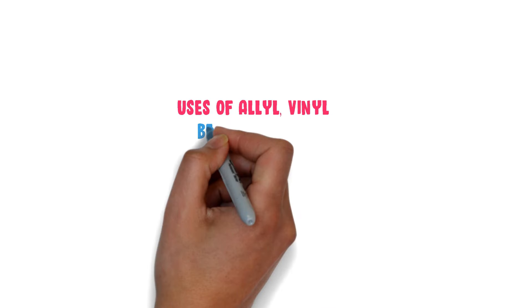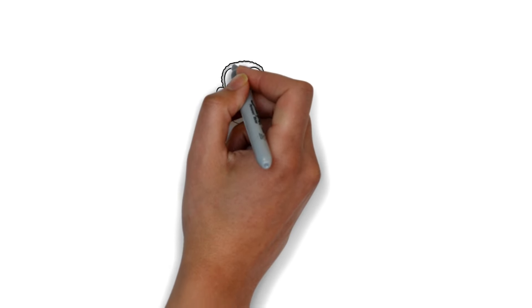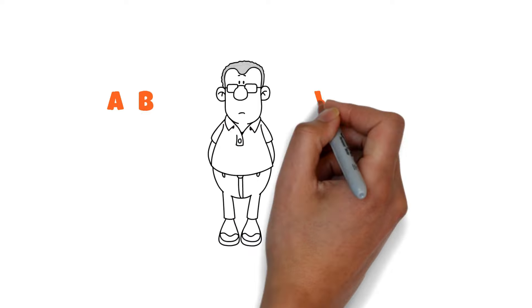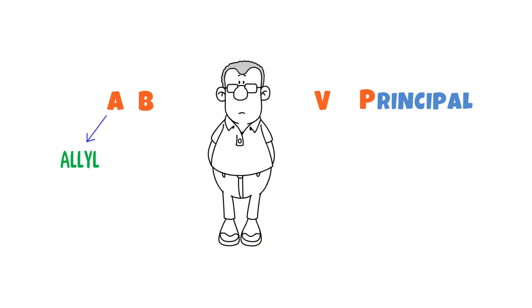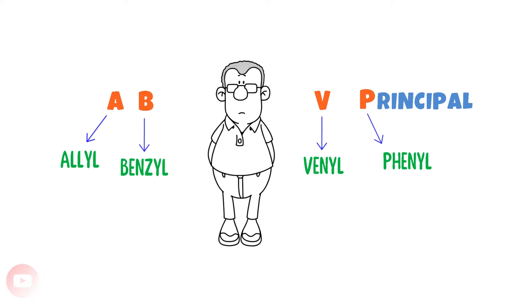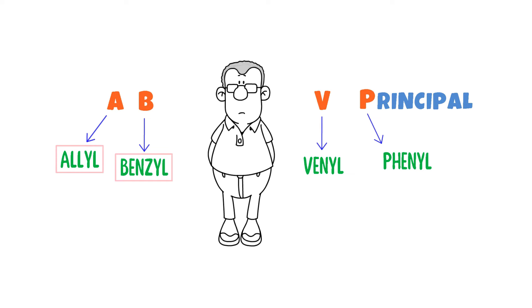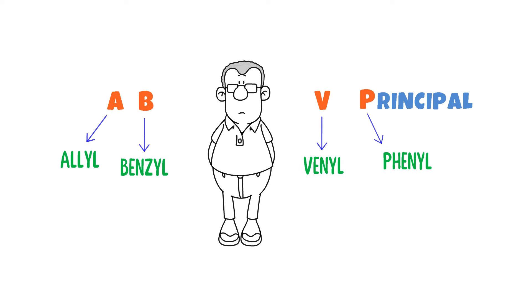Uses of Allyl, Vinyl, Benzyl, and Phenyl in common names. I will teach you my personal trick for naming them, using an easy mnemonic: the AB-VIS Principle. A stands for Allyl, B stands for Benzyl, V stands for Vinyl, and P stands for Phenyl. Remember that Allyl and Benzyl are similar things with a smaller difference, while Vinyl and Phenyl are also similar things with a smaller difference. Note down this mnemonic.